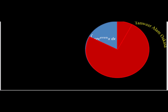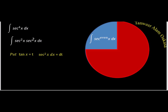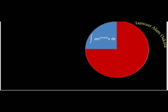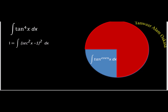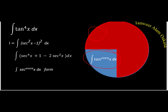For sec to power even, since the power is even, I split it and put tan(x) = t so that sec²(x)dx becomes dt. This is always straightforward. For tan to power even, I convert tan²(x) into (sec²(x) − 1), making everything sec to an even power, and then the same substitution tan(x) = t applies — sec²(x)dx becomes dt, and integration is easy.